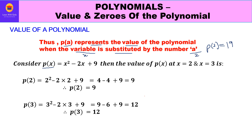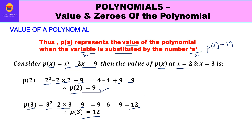Let us consider one more example. Suppose p(x) = x² − 2x + 9. We have to find the value of p(x) at x = 2 and x = 3. When x = 2: p(2) = 2² − 2×2 + 9 = 4 − 4 + 9 = 9. When x = 3: p(3) = 3² − 2×3 + 9 = 9 − 6 + 9 = 12. So at x = 2 the value of the polynomial is 9, and at x = 3 the value is 12.